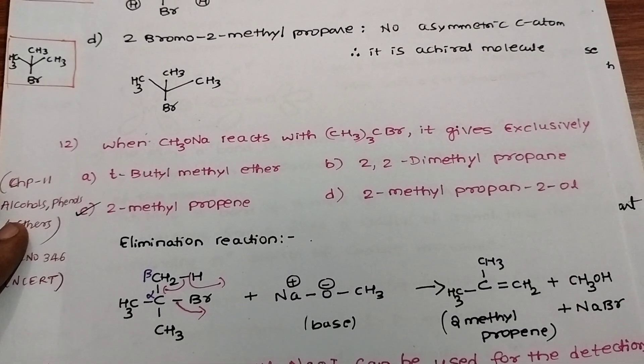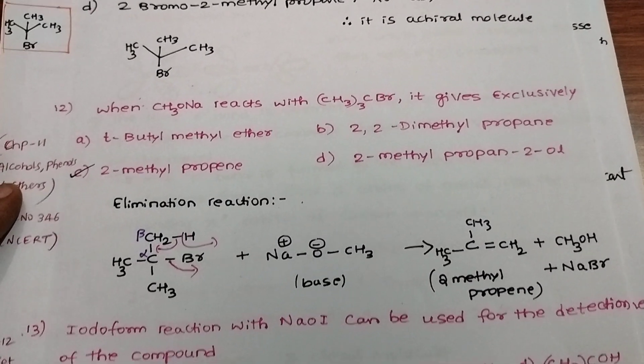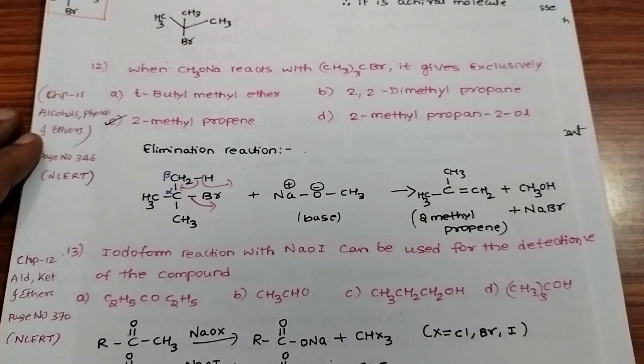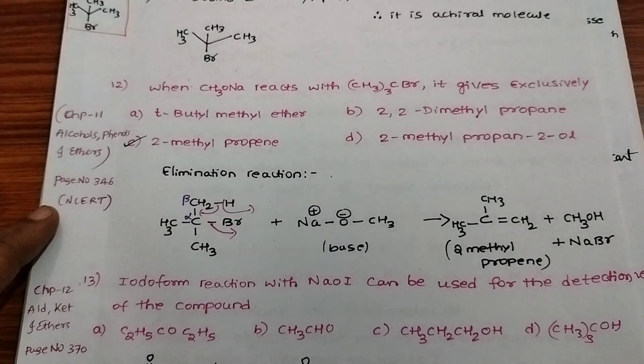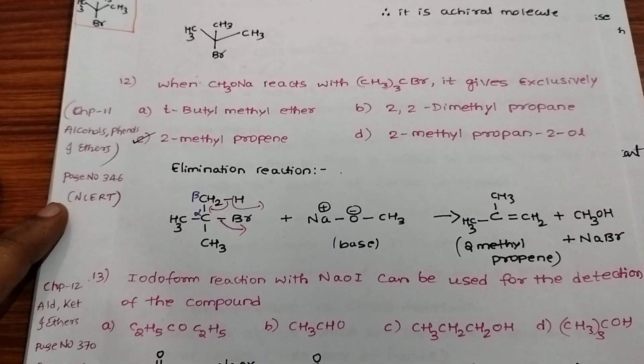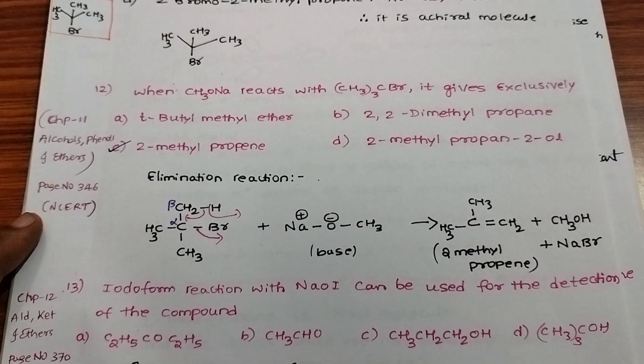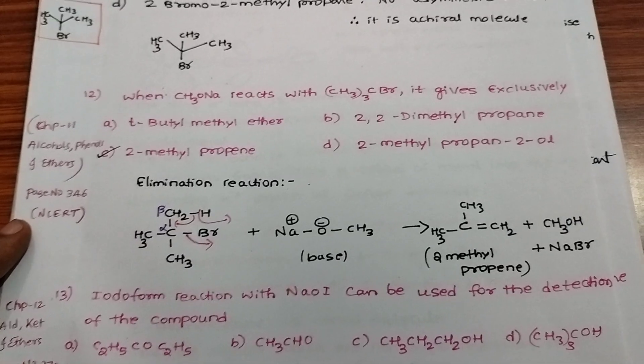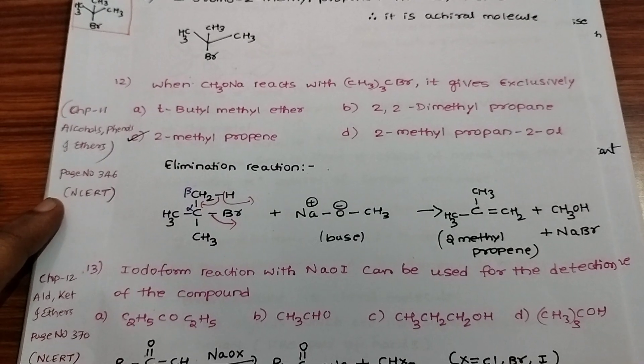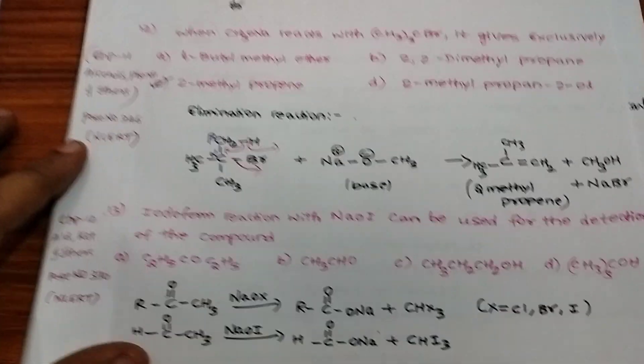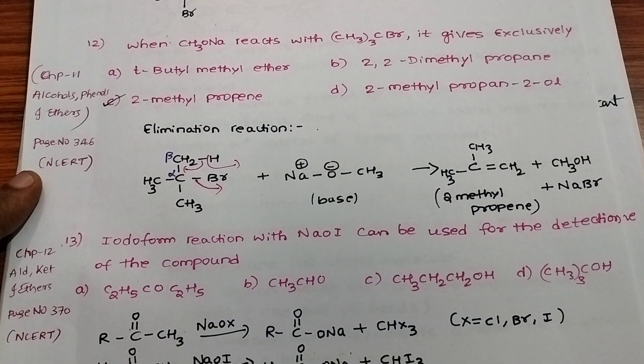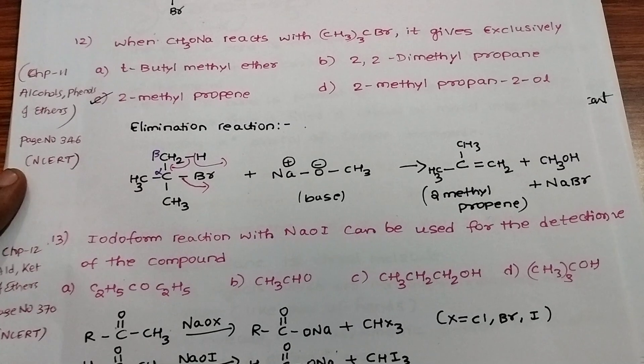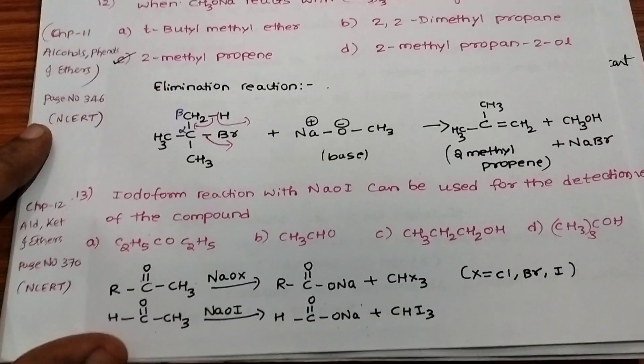When sodium methoxide reacts with (CH3)3CBr, it gives exclusively 2-methyl propene. This is an elimination reaction. Sodium methoxide acts as a base and forms 2-methyl propene. Iodoform reaction with sodium hypoiodite can be used in detection of compounds.